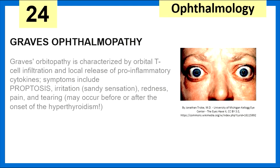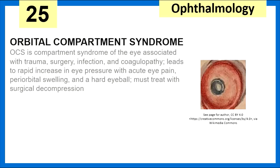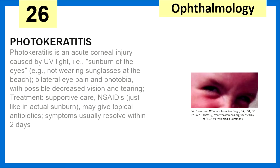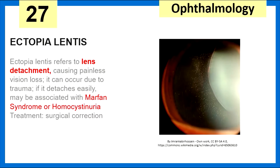Graves' ophthalmopathy — also known as Graves' orbitopathy — involves T-cell infiltration and local release of pro-inflammatory cytokines, causing proptosis where the eyes pop out, plus irritation such as a sandy sensation, redness, pain, and tearing. Orbital compartment syndrome is essentially compartment syndrome of the eye. Photokeratitis is a sunburn of the eye, treated with supportive care and NSAIDs since it usually resolves within two days. Ectopia lentis is lens detachment with painless vision loss — it can occur due to trauma, and if the lens detaches easily, consider Marfan syndrome or homocystinuria. Treatment is surgical correction.